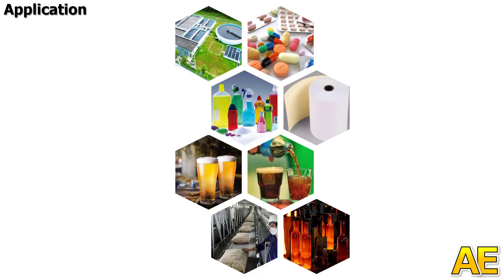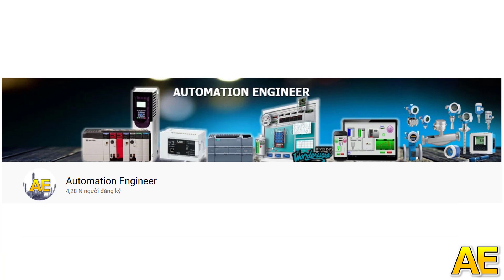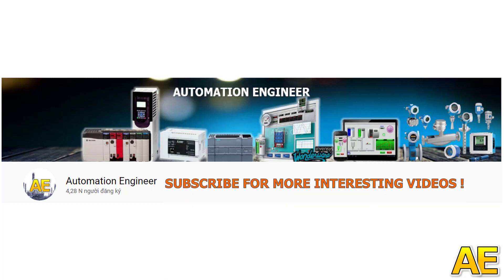These are some industrial applications for Siemens PCS7: wastewater treatment systems, medical and chemical manufacturing, paper, beer and drink, and cement and glass manufacturing. That's the introduction to Siemens PCS7. I will create a video for each layer and software. Please subscribe to my channel to watch more videos. Thank you.